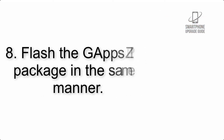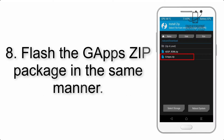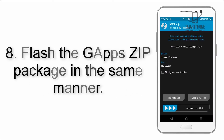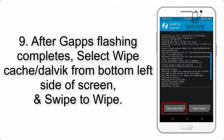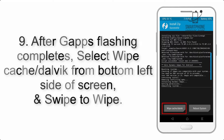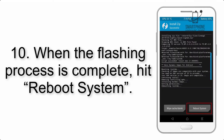Step 8: Flash the GApps zip package in the same manner. Step 9: After GApps flashing completes, select Wipe Cache and Dalvik from the bottom left side of the screen and swipe to wipe. Step 10: When the flashing process is complete,